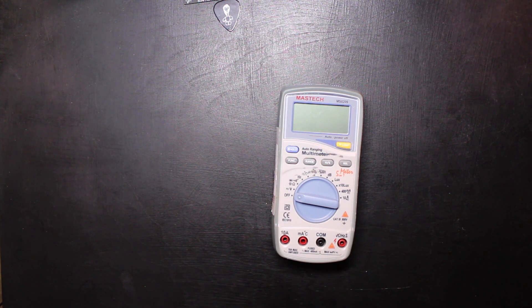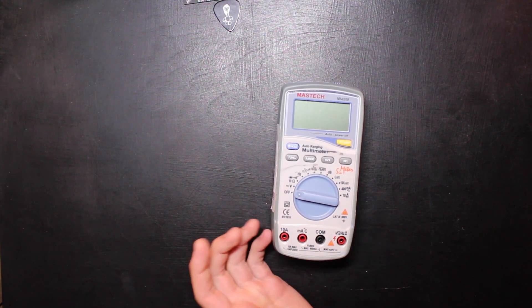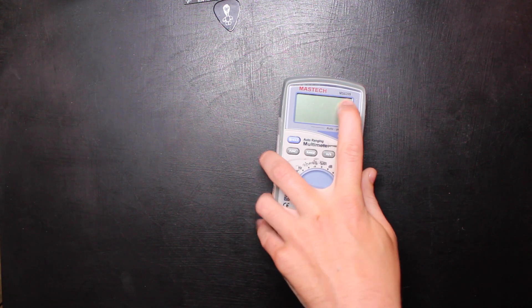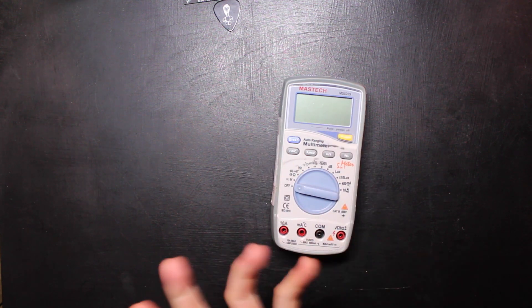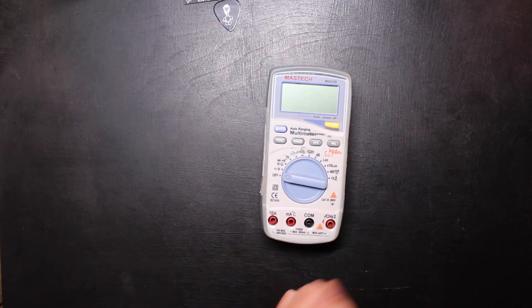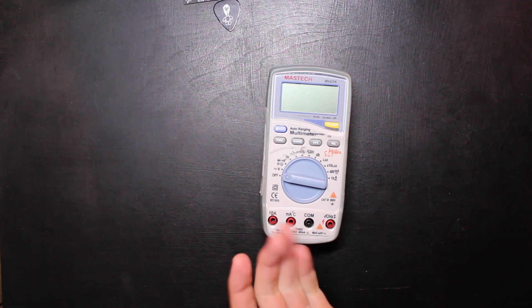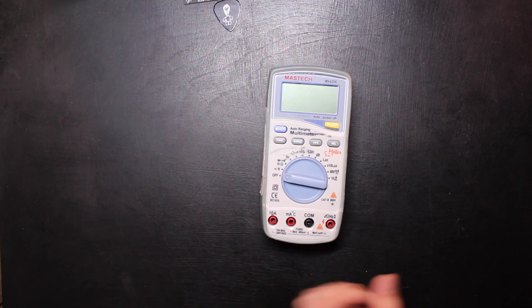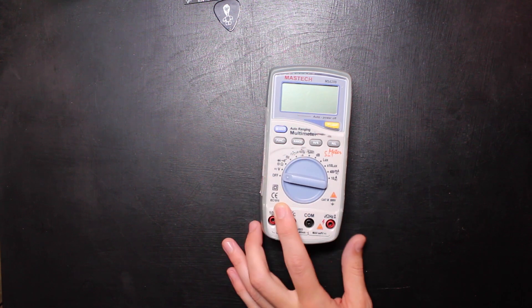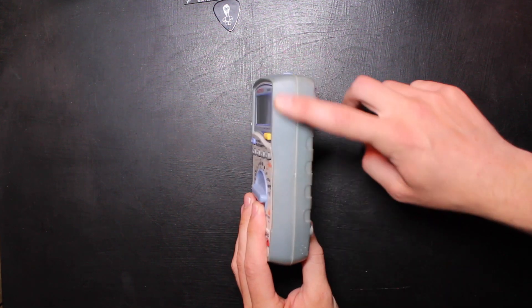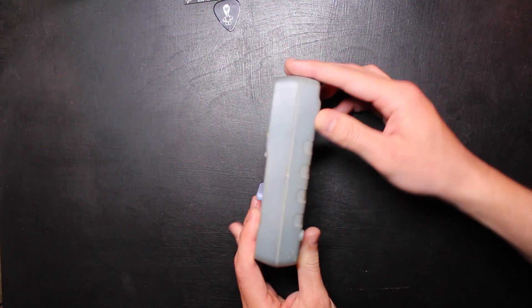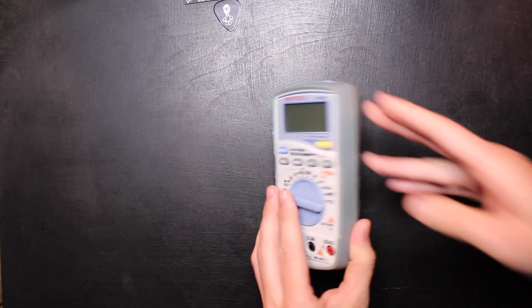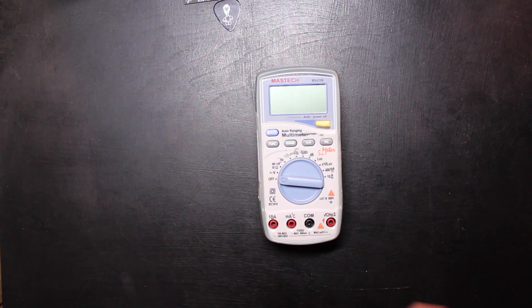For example, I carry around this Mastech MS8209 in my bag every day. I've probably had this meter for 10 years and you can tell it's cheap—I think I spent like $60 on it. The silkscreen's all rubbing off, the rubber on the side here is all discoloring and kind of rotting out, but it's a great meter and it's gotten the job done.